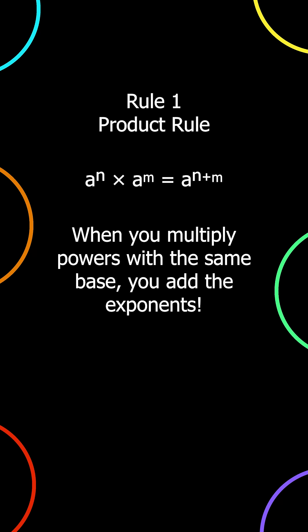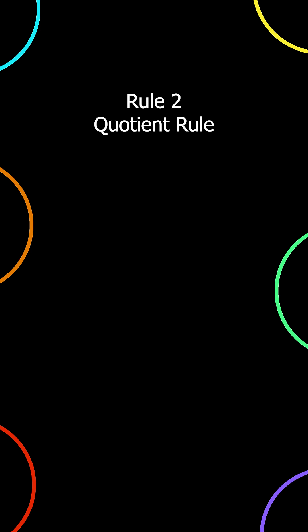Rule 1: Product rule. a to the power of n times a to the power of m is equal to a to the power of n plus m. When you multiply powers with the same base, you add the exponents. Example: 2 to the power of 3 times 2 to the power of 2 is equal to 2 to the power of 5.